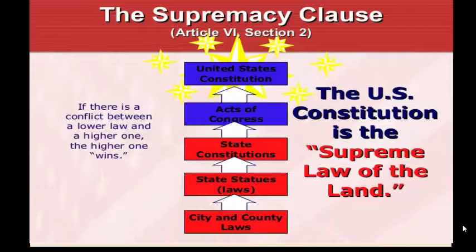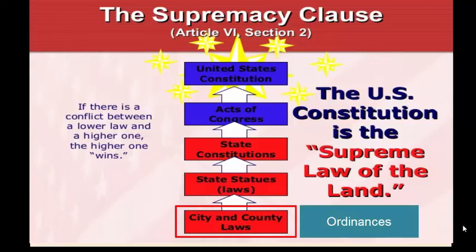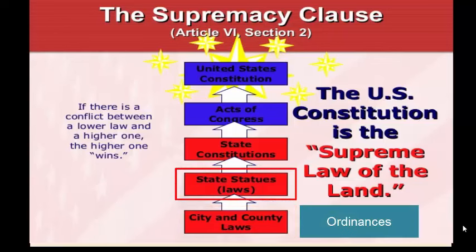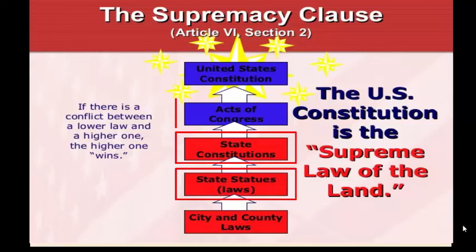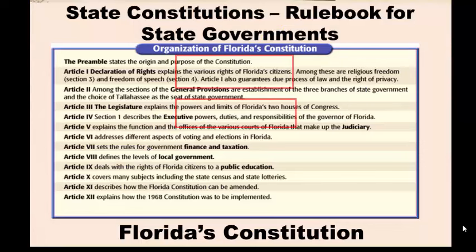Here's a chart showing the hierarchy. At the bottom are city or county laws, known as ordinances. Above that we have state laws or statutes, then state constitutions, then national laws called acts, and at the top is the U.S. Constitution. In our next video, we will take a closer look at state constitutions with a focus on the Florida Constitution.